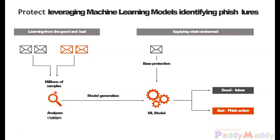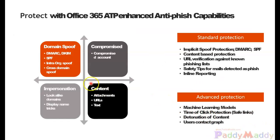Phishing protection is automatically enhanced with detect-and-respond automatic methods. This product integrates with many other products and just needs the Azure Monitoring logs as its base to work. It can analyze millions of samples, generate models with the help of machine learning, and create base protection policies for good inbox or bad phishing inbox. Domain spoofing, compromised content within attachments, URLs, text, look-alike domains, and domain name tricks can all be automatically validated.